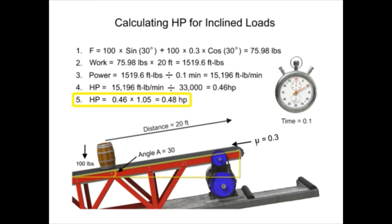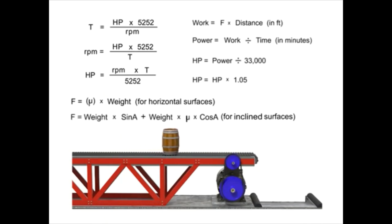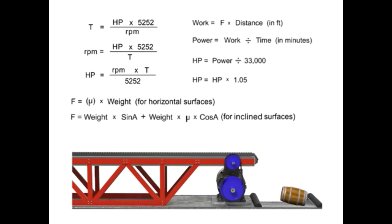As expected, it takes a stronger motor to move weight up an incline than on a horizontal surface. The relationships among horsepower, speed, RPM, work, power, and force allow technicians and system designers to determine the appropriate characteristics of motors, cylinders, and other fluid system components required to operate any system.